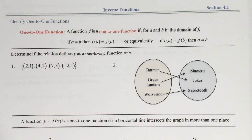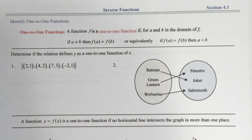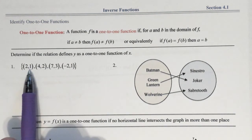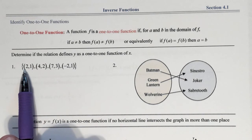Here's the definition: a function F is a one-to-one function if for A and B in the domain of F, when A is not equal to B, then F(A) is not equal to F(B). That's a complicated version of it. Basically, a one-to-one function has to be, first and foremost, a function. Then, for every X you're going to have exactly one Y, and vice versa — that Y can only come from one X.